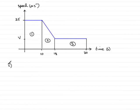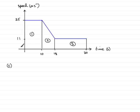Now, finally, in part C, we're asked to find the deceleration of the car over the interval between 10 and 18 seconds. So what I'm going to do first of all is just update the diagram. Remember in part B we found that V was 11, so I'm going to write that back in now as 11 meters per second.